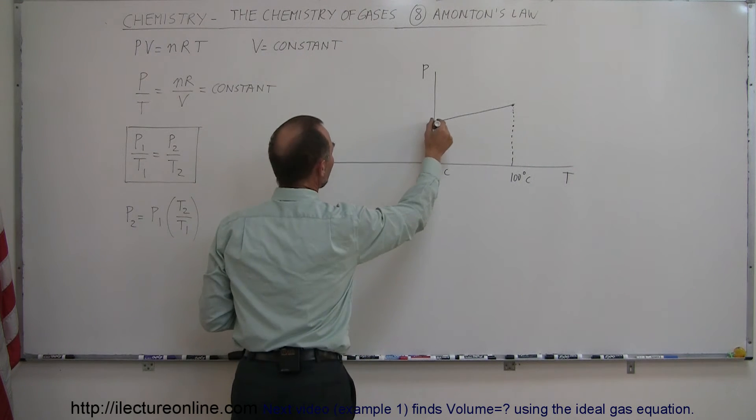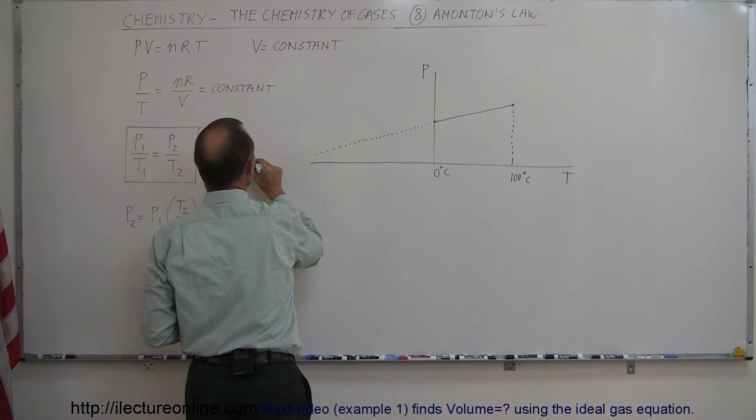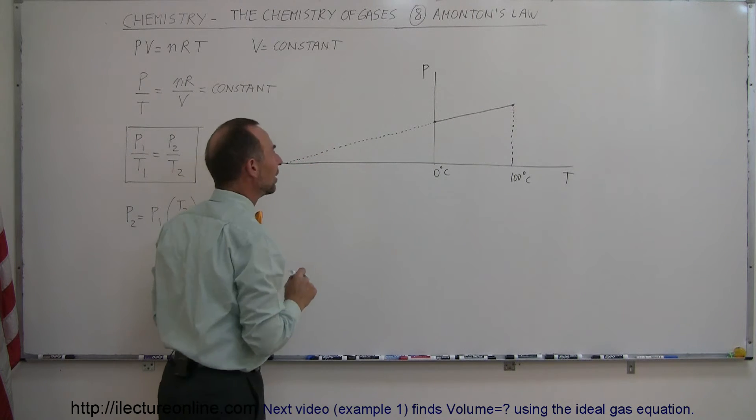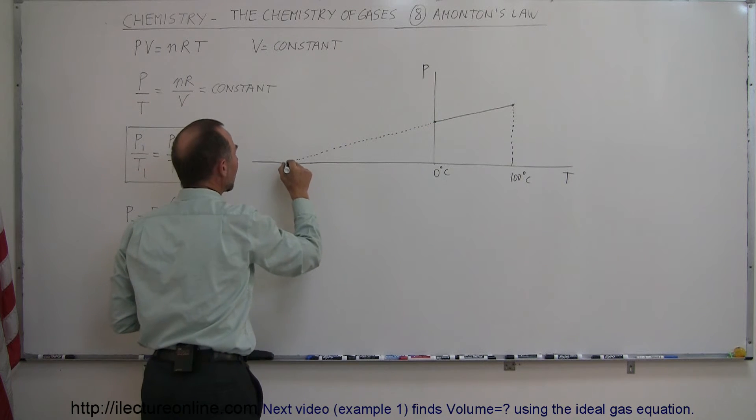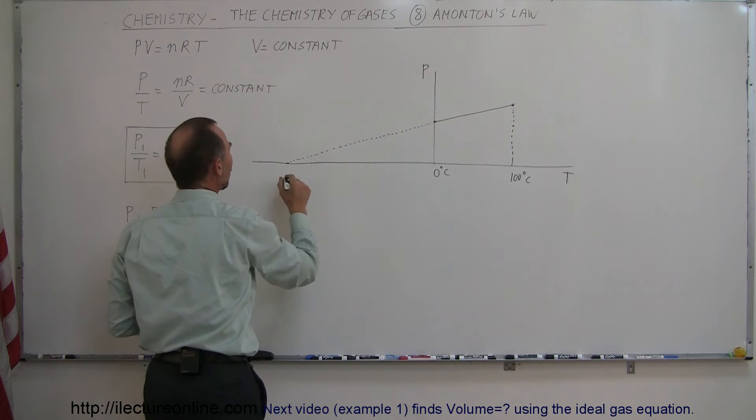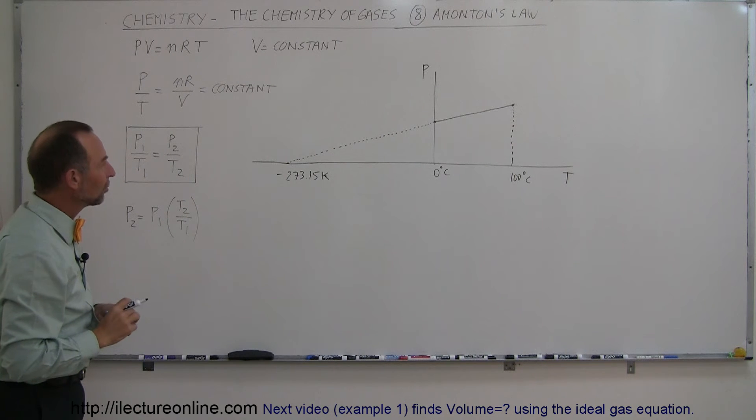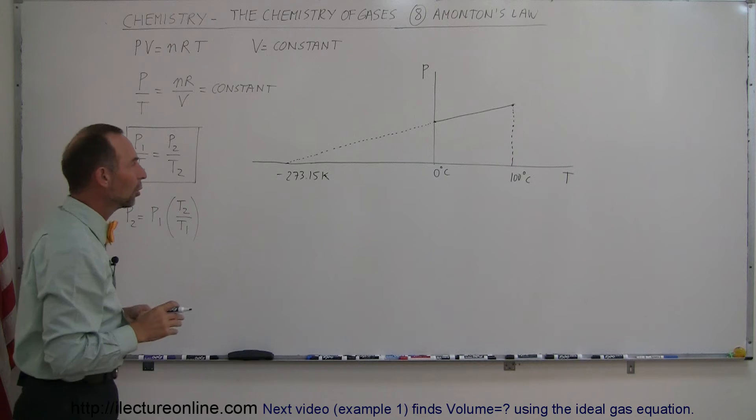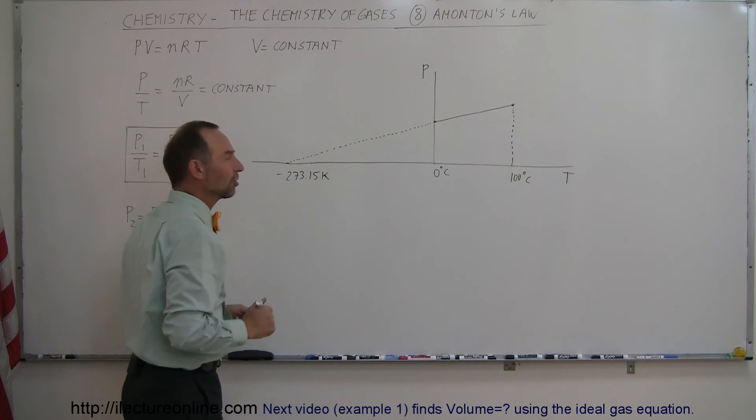If they extrapolated that through to cold and colder temperatures—even if they theoretically, in a practical sense, could not achieve that in an experiment—if they did it through a theoretical experiment saying what if we extrapolate this curve down, they would hit the zero pressure point at a temperature of minus 273.15. That was an amazing discovery. So if we continue to cool down the gas, eventually we get to zero pressure at this particular temperature.